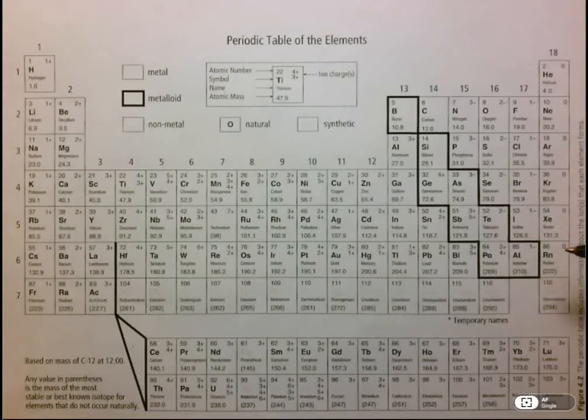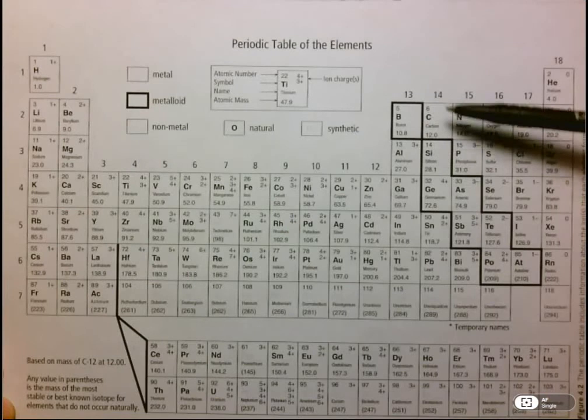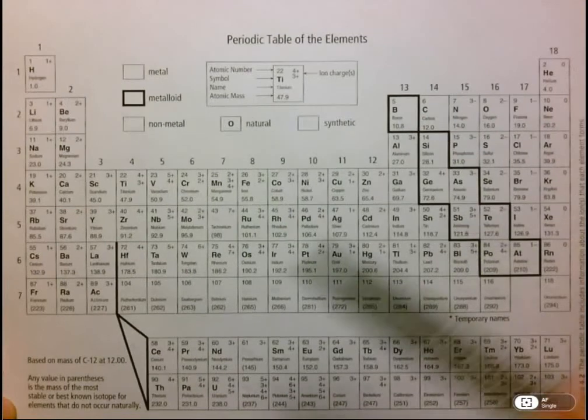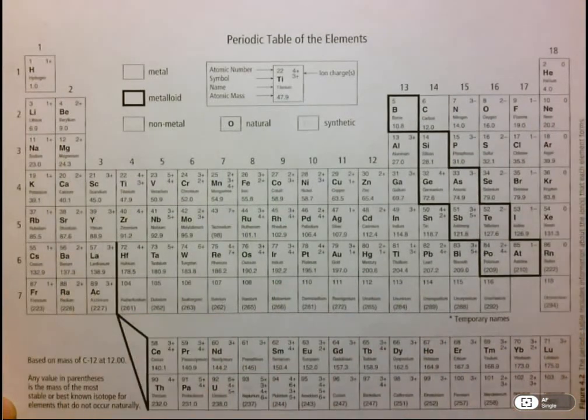What I really want to focus on is two of the main structures in the periodic table. There's quite a few structures in here, but I want to focus on the groups, which are represented by the columns in the periodic table, and the periods, which are represented by the rows.